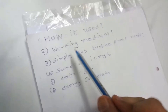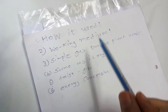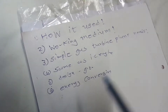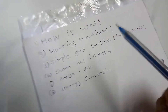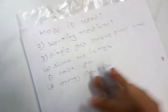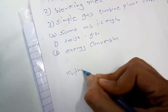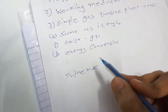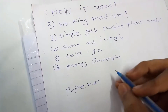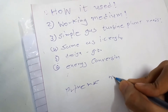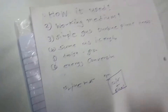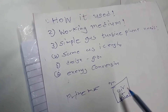In this video I will tell you how it is used, what is the working medium, and what a simple gas turbine power plant consists of. Gas turbine is used as a prime mover — it converts energy into mechanical energy. The working medium is combustion of fuel, which is a mixture of air plus fuel, and this is the working medium used in a gas turbine.